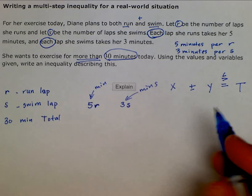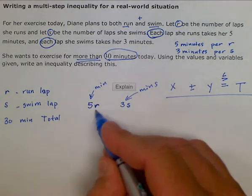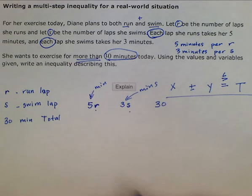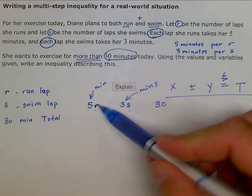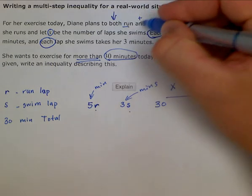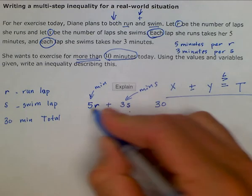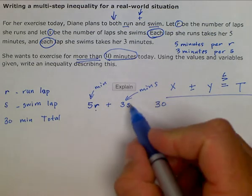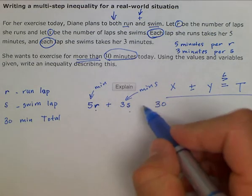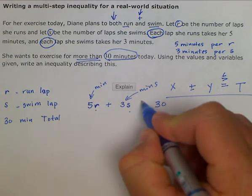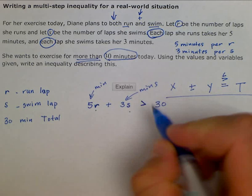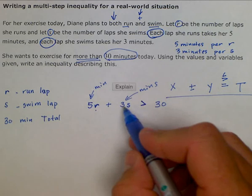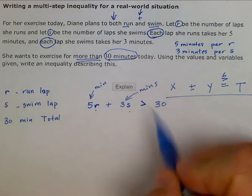Setting it up in this form, we have variable, variable, and sum total of 30. Now we just need to figure out our operations. She wants to do both running and swimming — 'and' implies addition. She will run and swim laps, and she wants to make sure the time she spends running and swimming is more than 30 minutes. So we put our greater-than sign here: five minutes per lap running, added to three minutes per lap swimming, is greater than 30 minutes. And we're done.